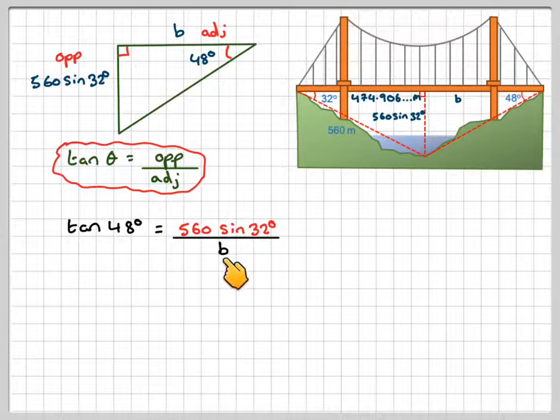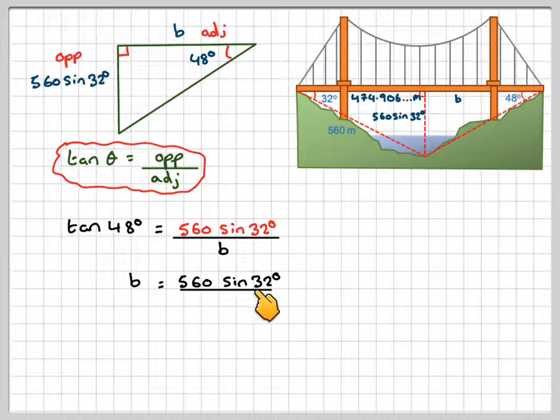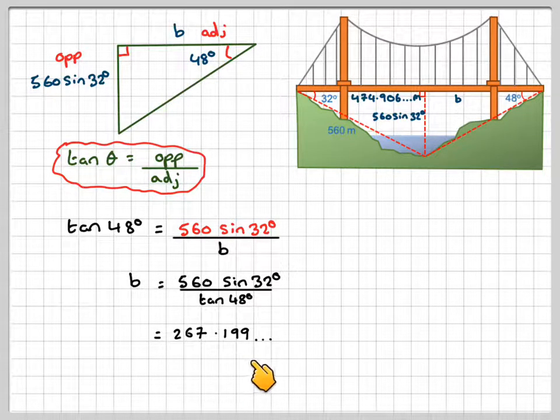Now you have to be careful when you rearrange this, because when you rearrange this, the B will come here, and the tan 48 will come here. So B will be 560 sine 32 divided by tan 48. Use the fraction button on your calculator, and that will give an answer 267.199.